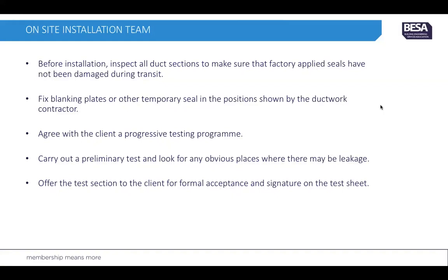The installation team also needs to agree with the client on a progressive testing programme. Ideally they should carry out a preliminary test to look for any obvious places where there may be leakage — there may possibly be an access door missing, or a duct joint completely broken, and obviously you would never get a satisfactory test result in that case. You then need to offer the test section to the client for formal acceptance and signature on the test certificate.